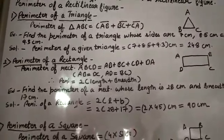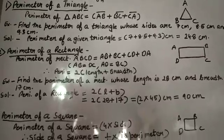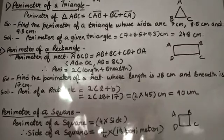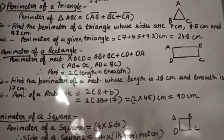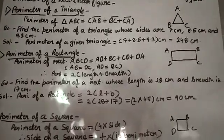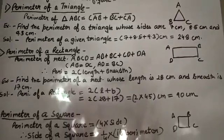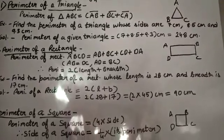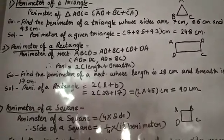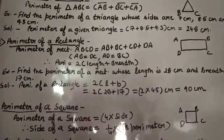After adding all three line segments you will get the perimeter of triangle ABC. Now let's take an example: find the perimeter of a triangle whose sides are given. In a triangle there are three sides, so three side measurements are given — one side is 7 cm, second side 8.5 cm, and third side is 9.3 cm.